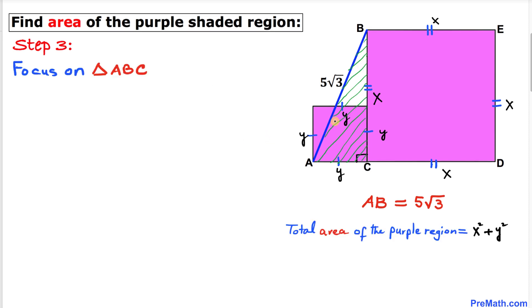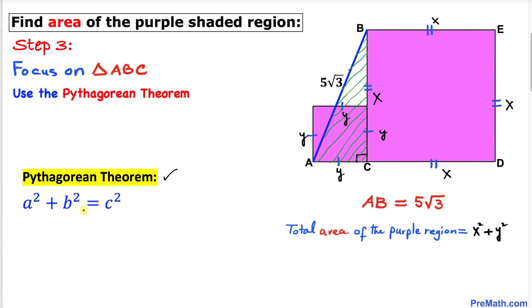Here's our next step. Let's focus on this triangle ABC — we know that this is a right triangle, so we are going to use the Pythagorean theorem: a squared plus b squared equals c squared. In our triangle, the longest leg is AB, which I'll call c. In our case, this side is x, so we get x squared, plus this side is y, so y squared, and this longest leg c is five times square root of three, so c squared is (5√3) squared.